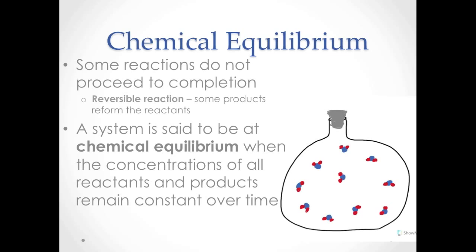These reactions are said to be reversible reactions, because some of the products react to reform the reactants. Reversible reactions proceed until the system reaches equilibrium. Equilibrium is achieved once the concentrations of all the reactants and products remain constant over time.